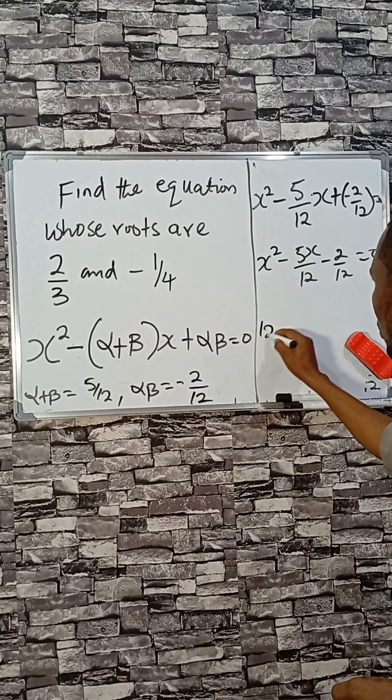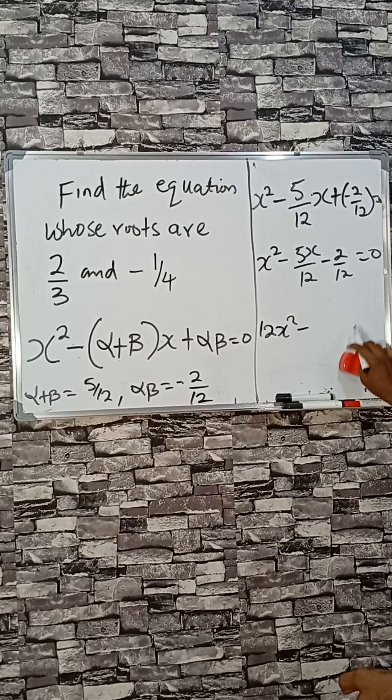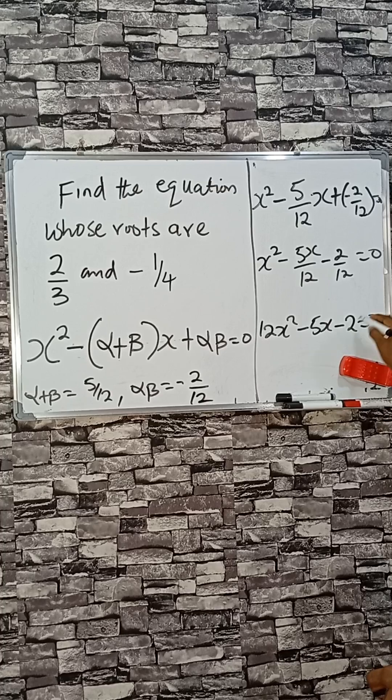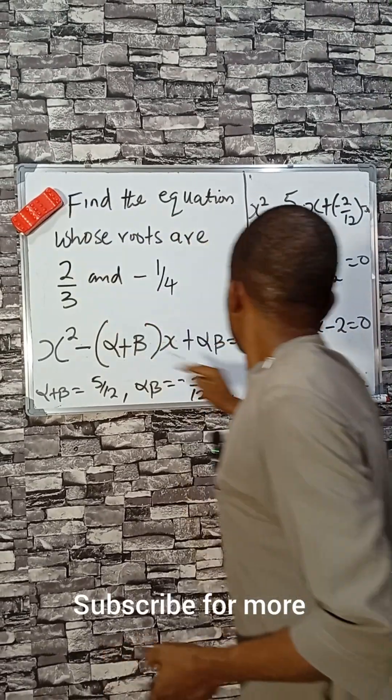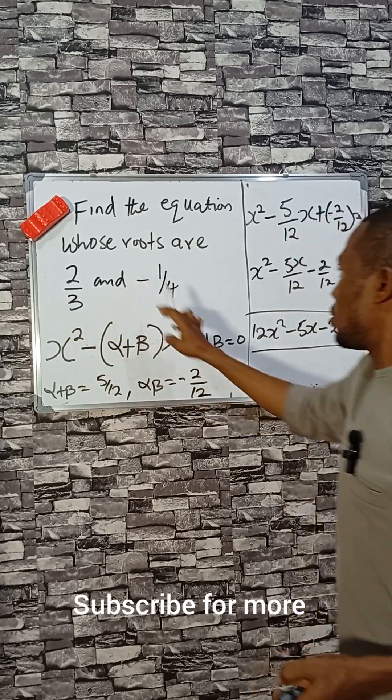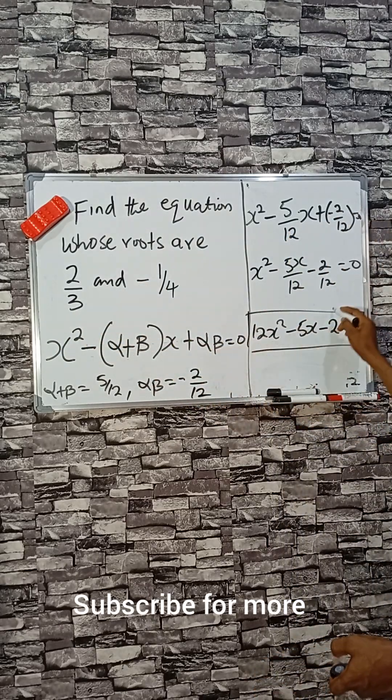Multiply by 12 to make it simpler: 12x² minus 5x minus 2 equals zero. This is the equation whose roots are 2/3 and -1/4. That is the answer.